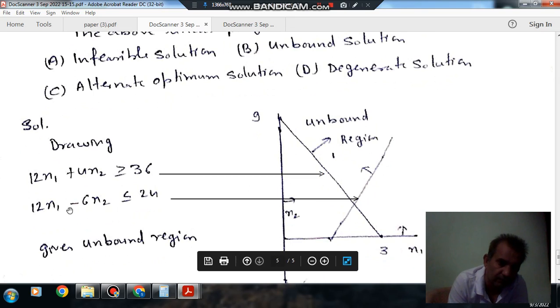Similarly, if we draw 12x1 minus 6x2 less than or equal to 24, when x2 equals 0, x1 will be 2.